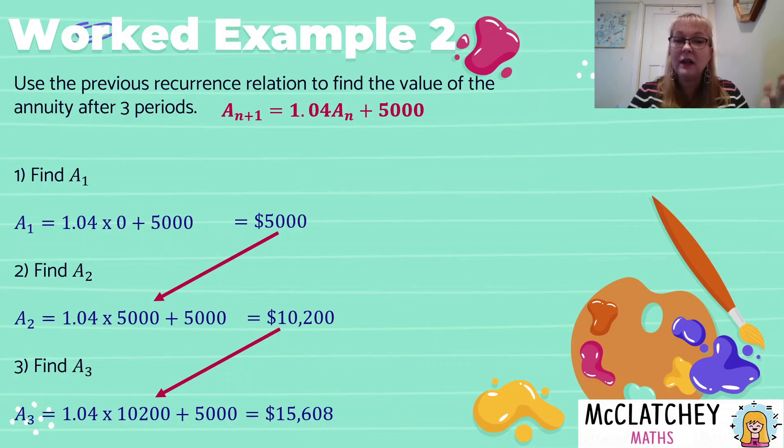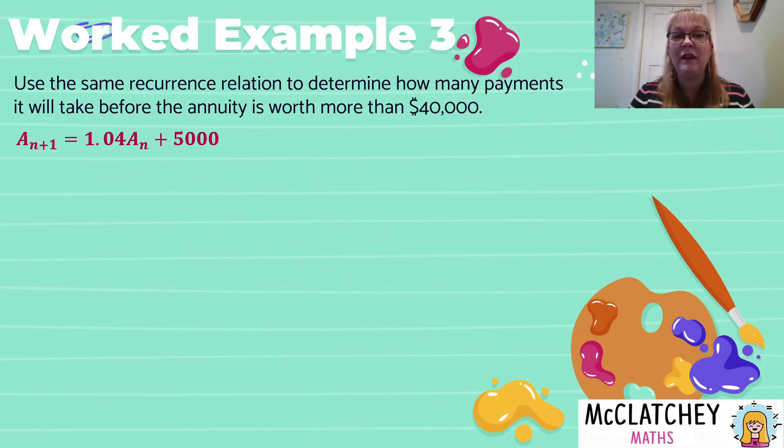So let's now look and find the next three values of the annuity after three periods. We've got our recurrence relation. We're actually going to use it now. So firstly, we want to find A one. Now we know at time zero, there was nothing in the bank. So we're going to substitute into the recurrence relation the value of zero where we see A N. And then we're going to add 5,000. So you can see in that first period that is happening, we're putting the $5,000 in the bank, but it's actually not going to incur any interest at all.